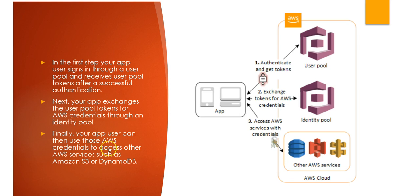To explain this, here is a short scenario. In the first step, the app user signs into the user pool and gets a successful authentication — it receives a token. Next, the app exchanges the user pool token for AWS credentials through an identity pool. Finally, the app user can then use those AWS credentials to access other AWS services such as Amazon S3 or DynamoDB.